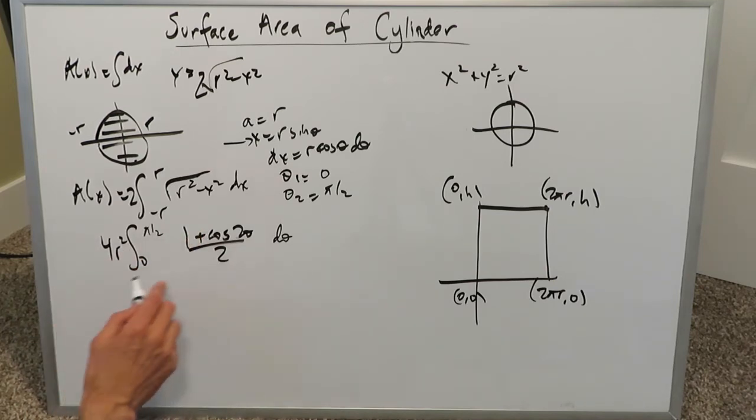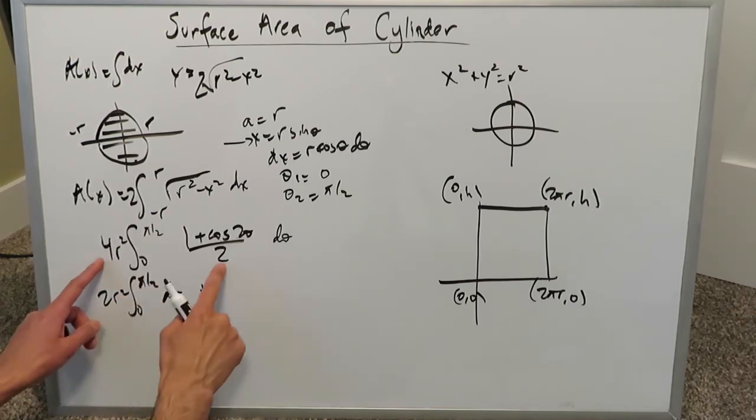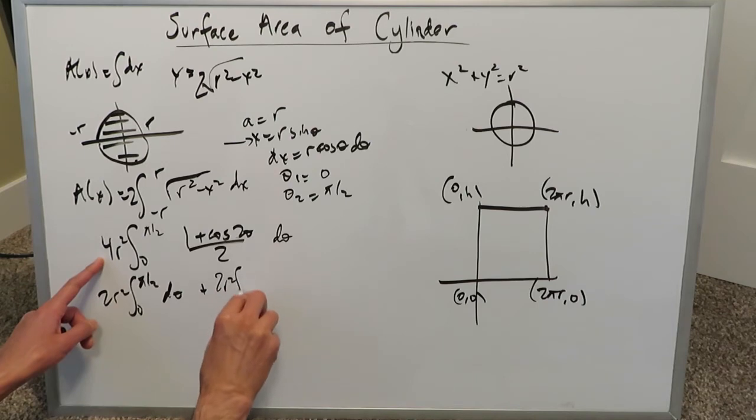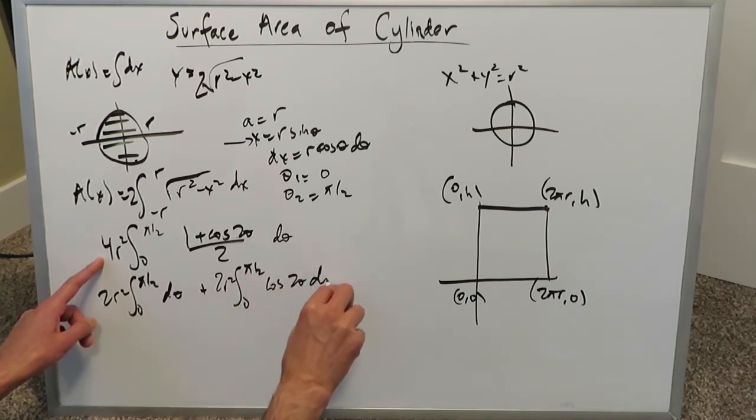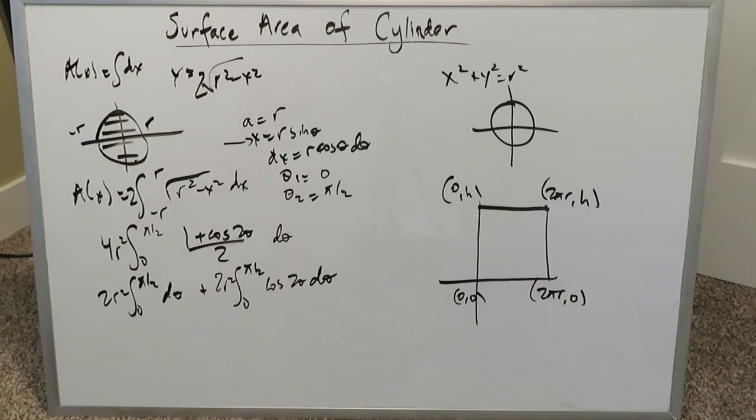We'll have 4r²/2, we'll have 2r², 0 to π/2, dθ, and then we'll have 4r²/2, which is 2r², from 0 to π/2, cos 2θ dθ. I've shown quite a few number of times that this thing, all of this zeros out in terms of its definite integration procedure.